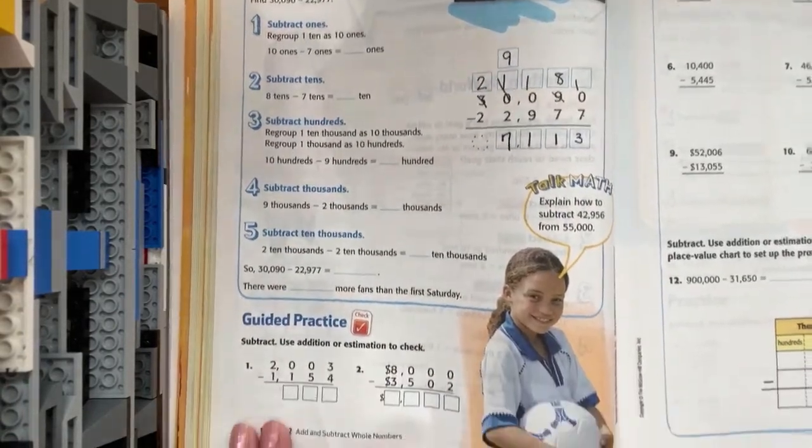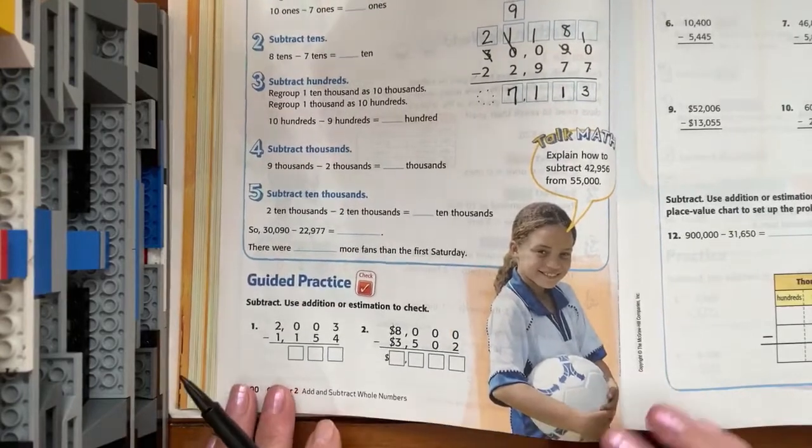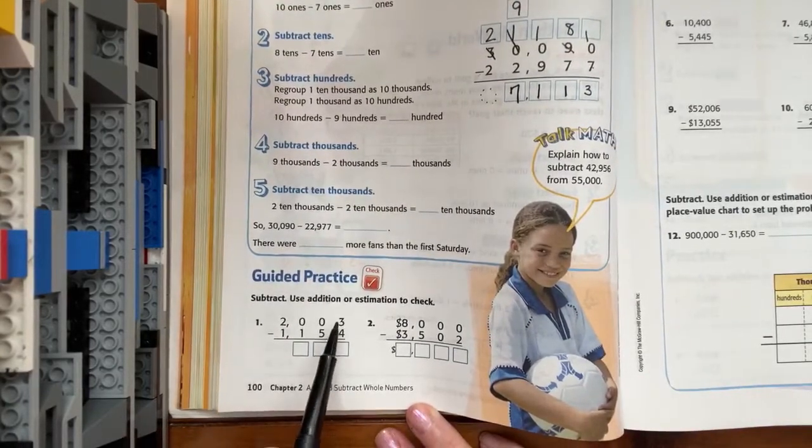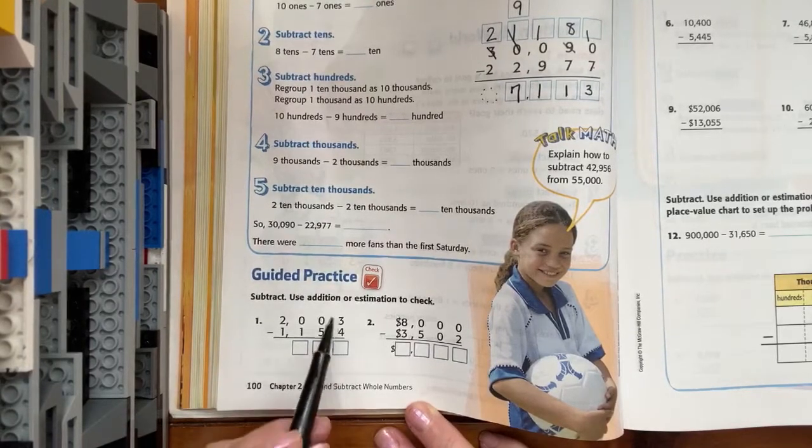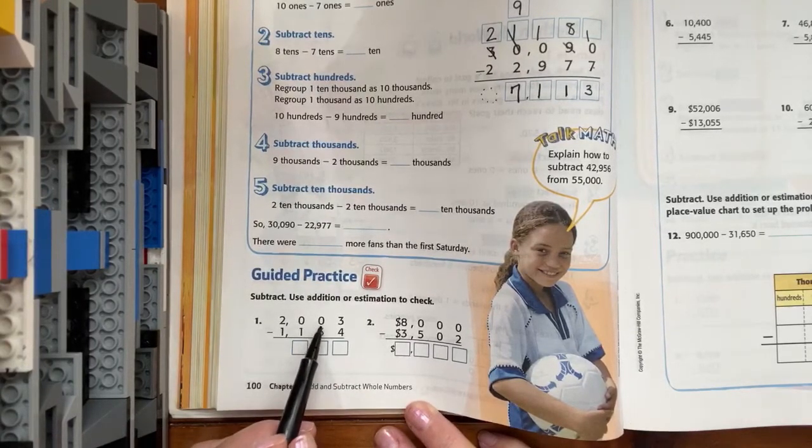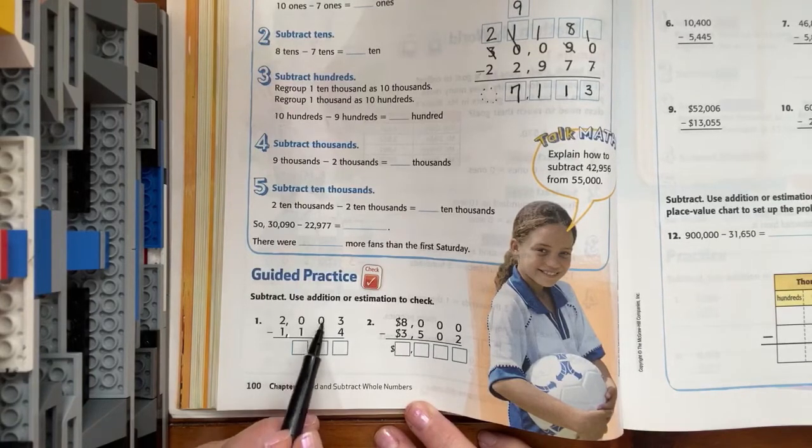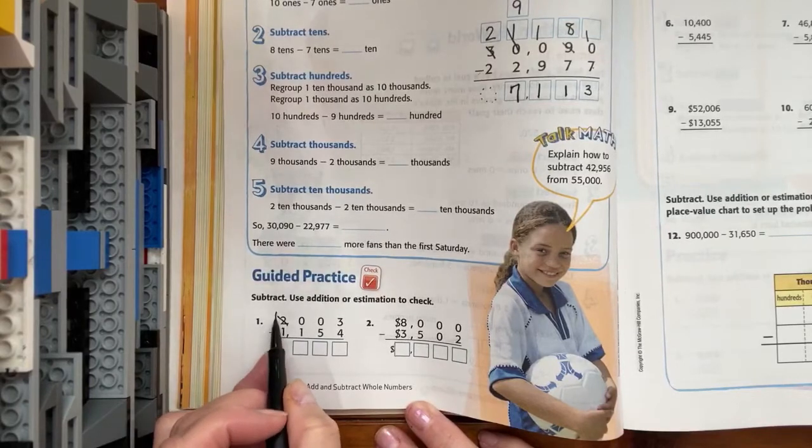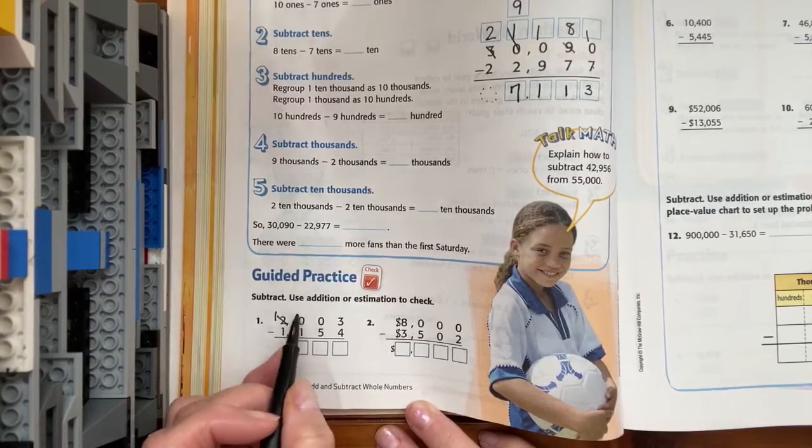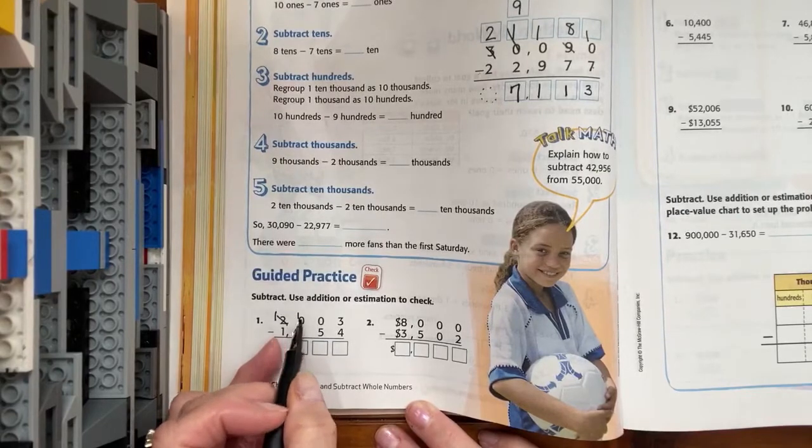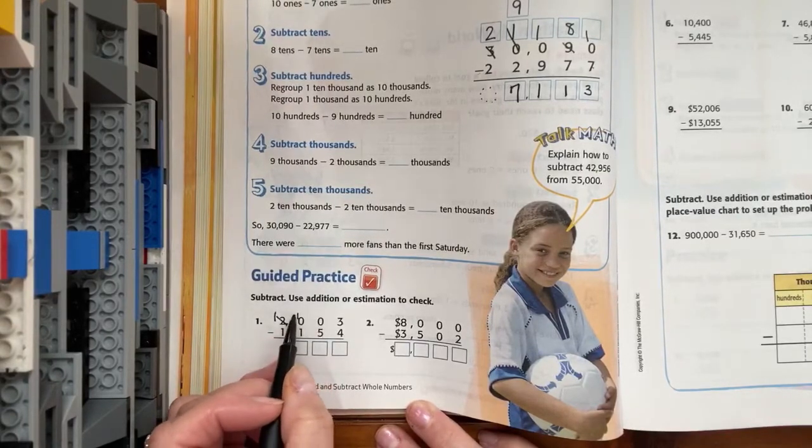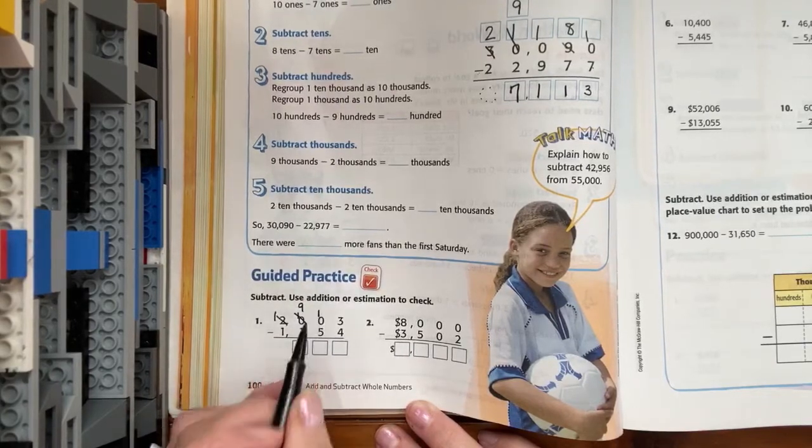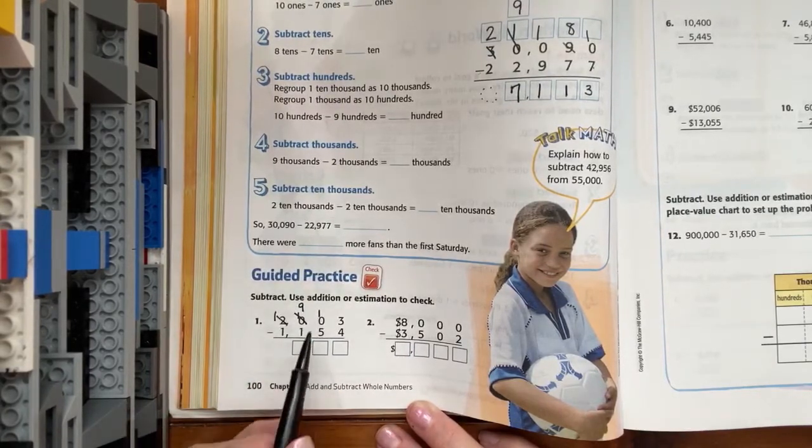So, let's work on a couple of guided practice down here at the bottom. We have three minus four. I can't do it. So, I'm going to have to go next door. But there's nothing there. It's just zeros. I'm going to have to go all the way to the thousands place, and take a thousand. So, I'm going to show that I'm leaving one there, and I'm going to put it here. But I can't leave it there because I still don't have anything in the tens place. So, I'm going to cross it out. I'm going to show that I'm leaving nine behind, and I'm going to put that here in the tens place.